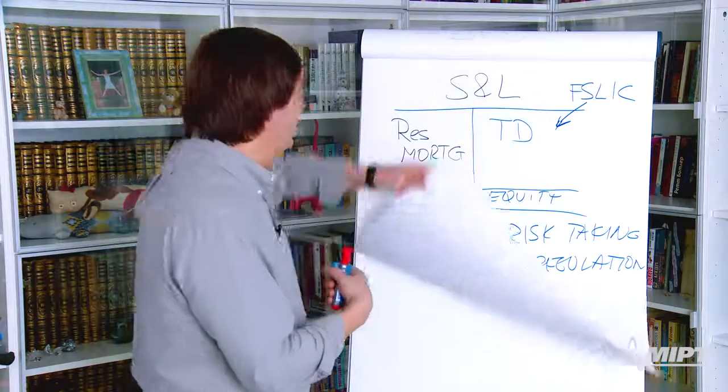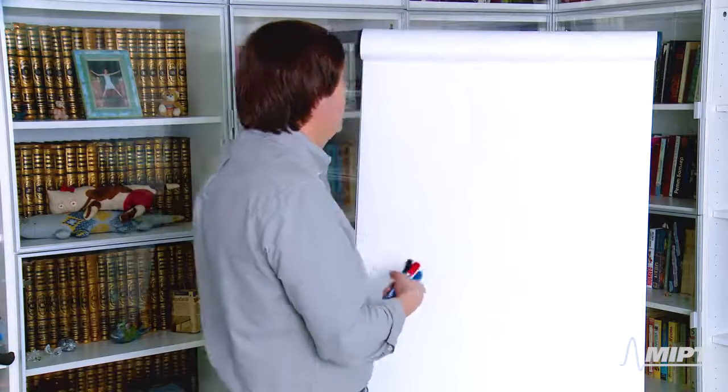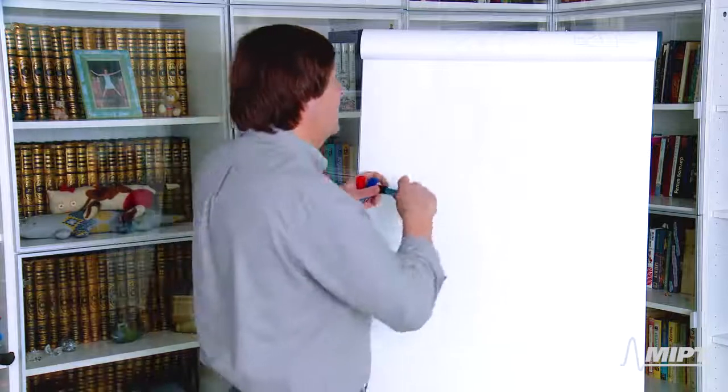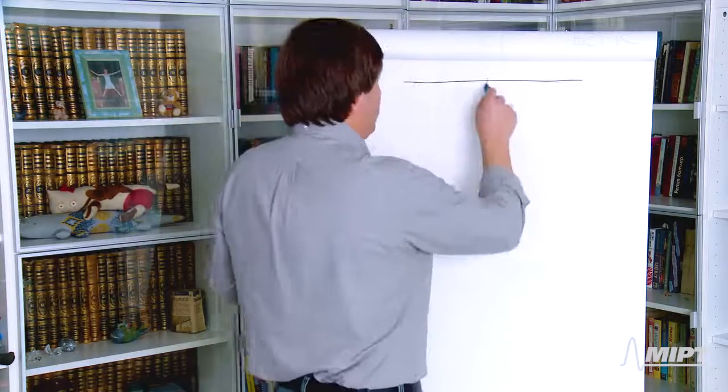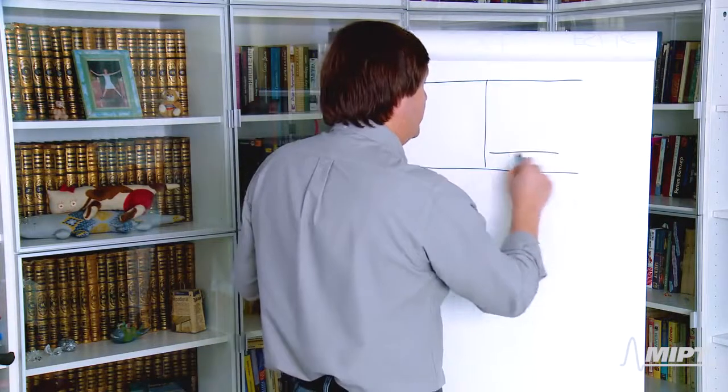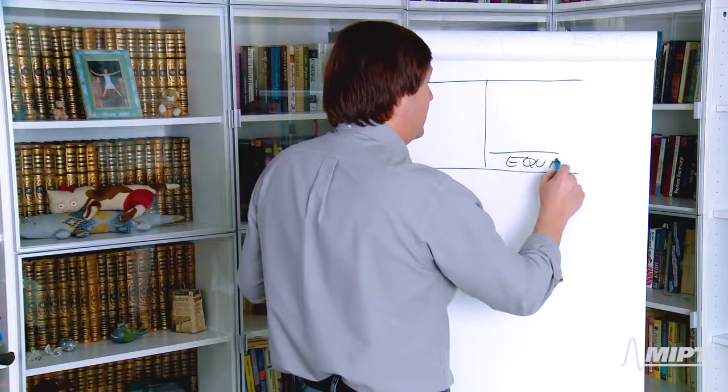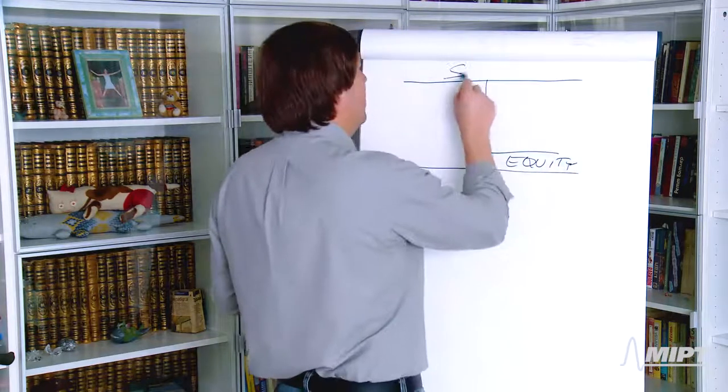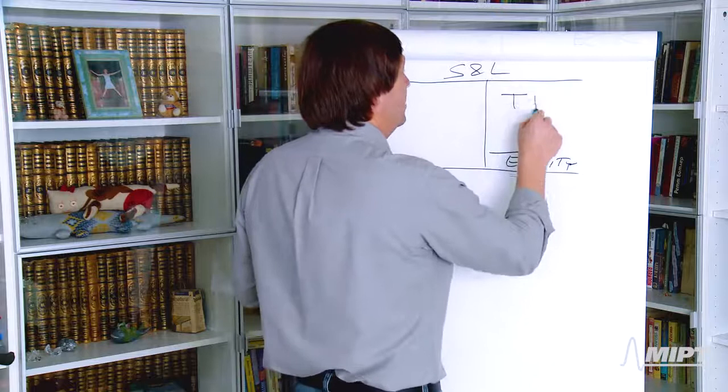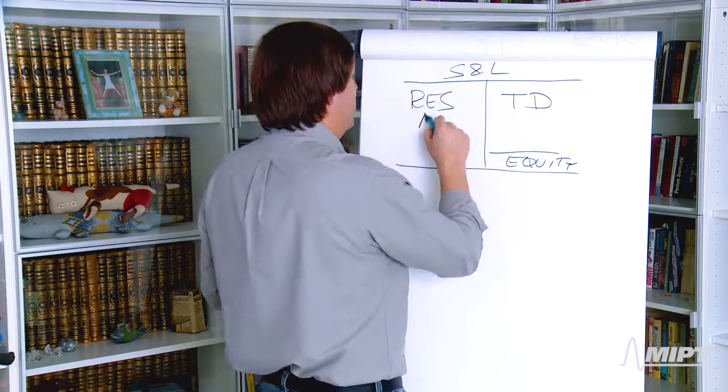In order to talk about that I will just flip over the chart and we'll reproduce that once again. Now again, this is equity at an S&L. This is the S&L simplified balance sheet. These are time deposits and these are residential mortgages.